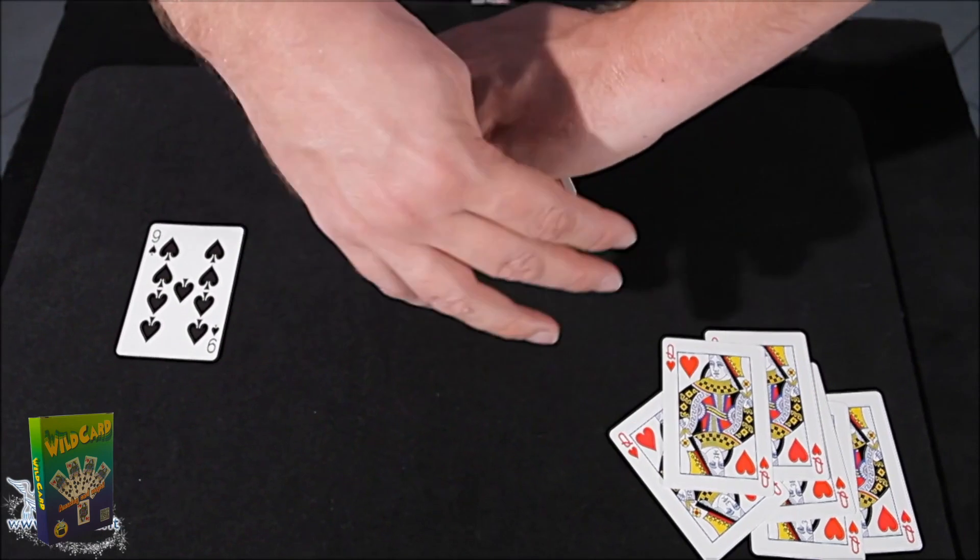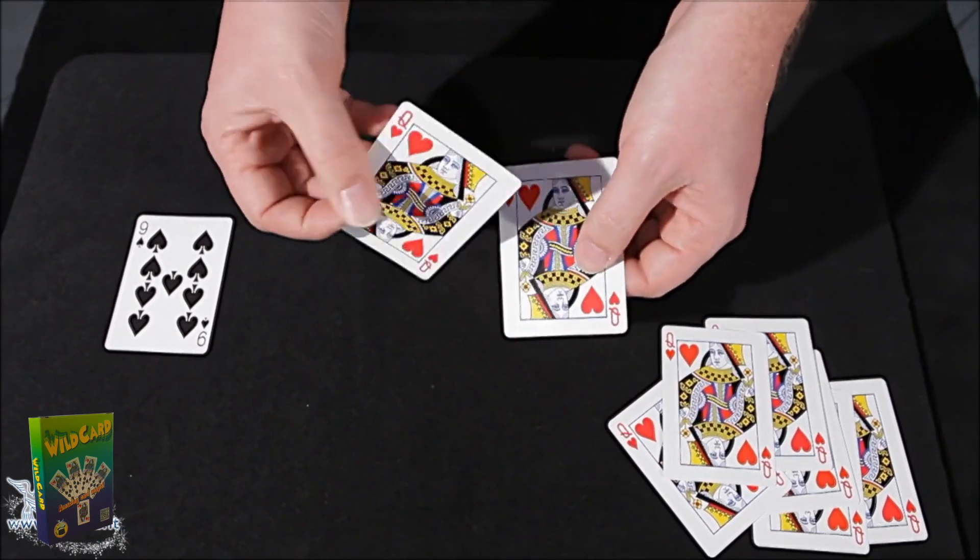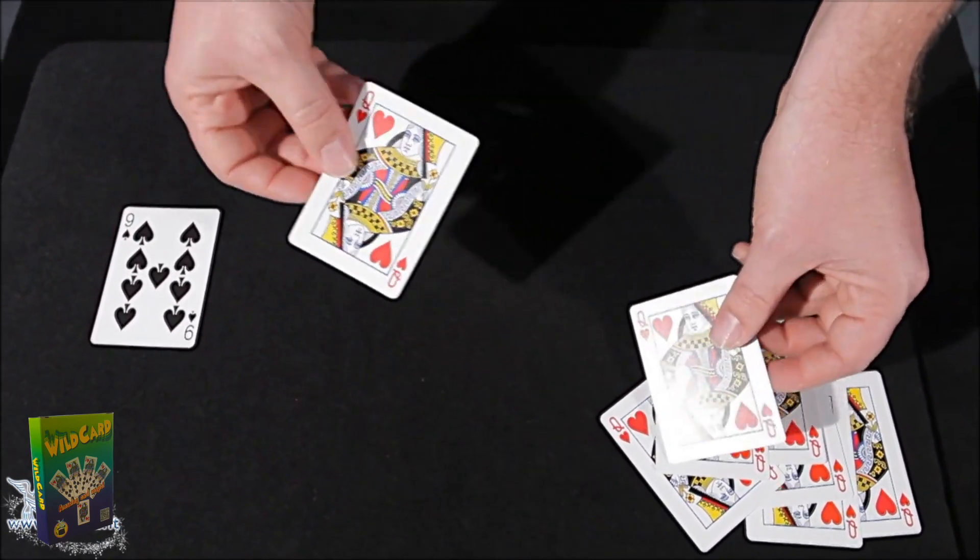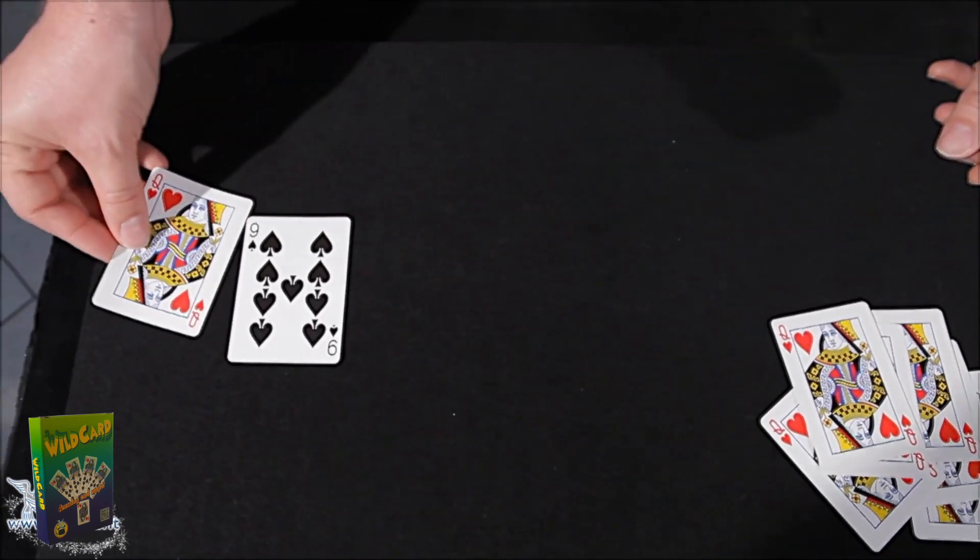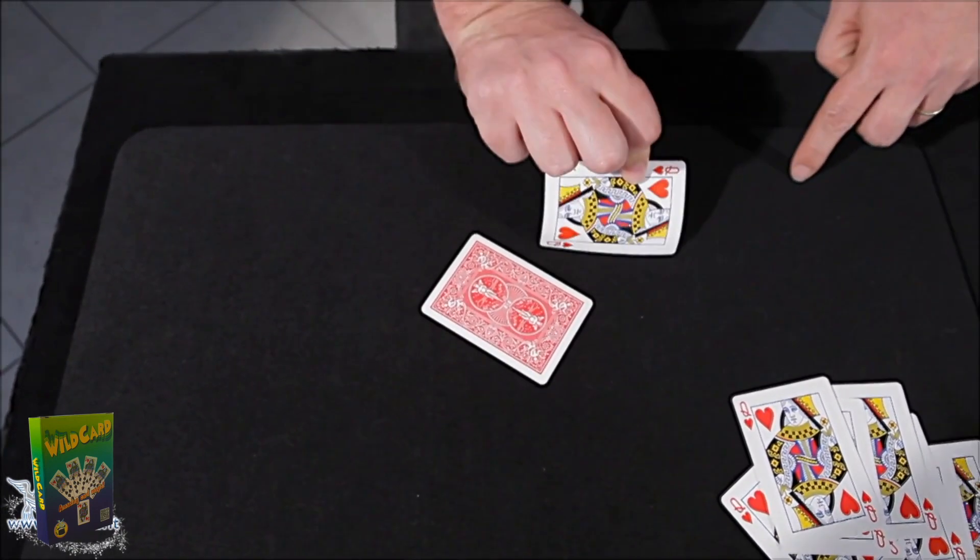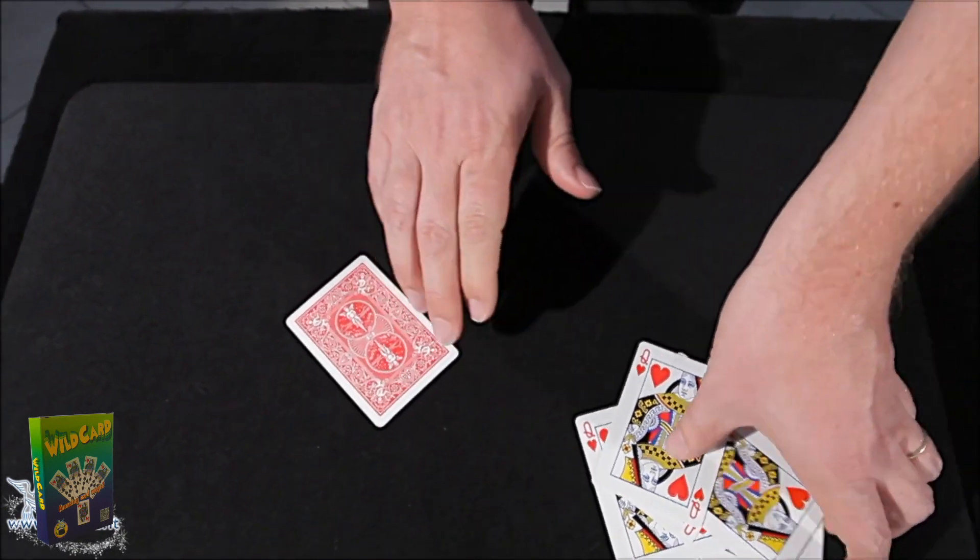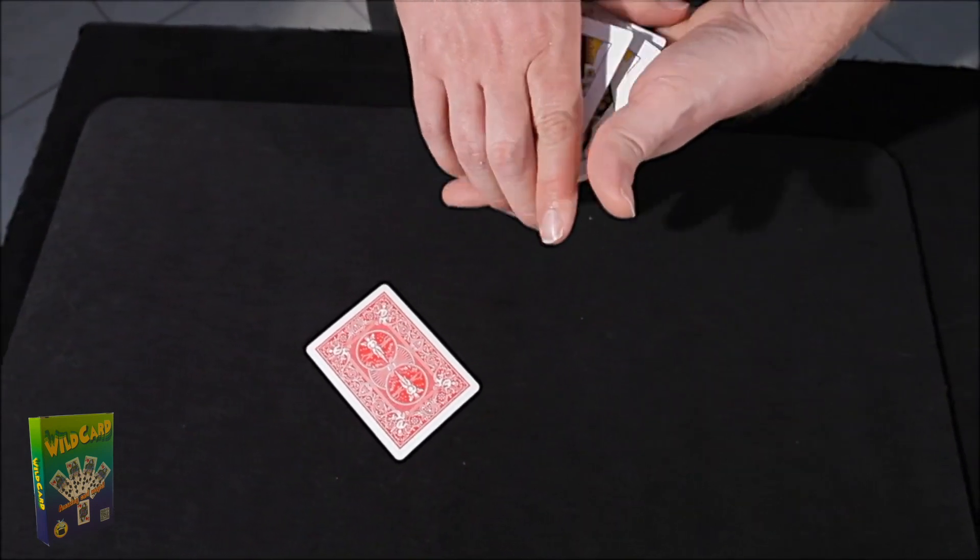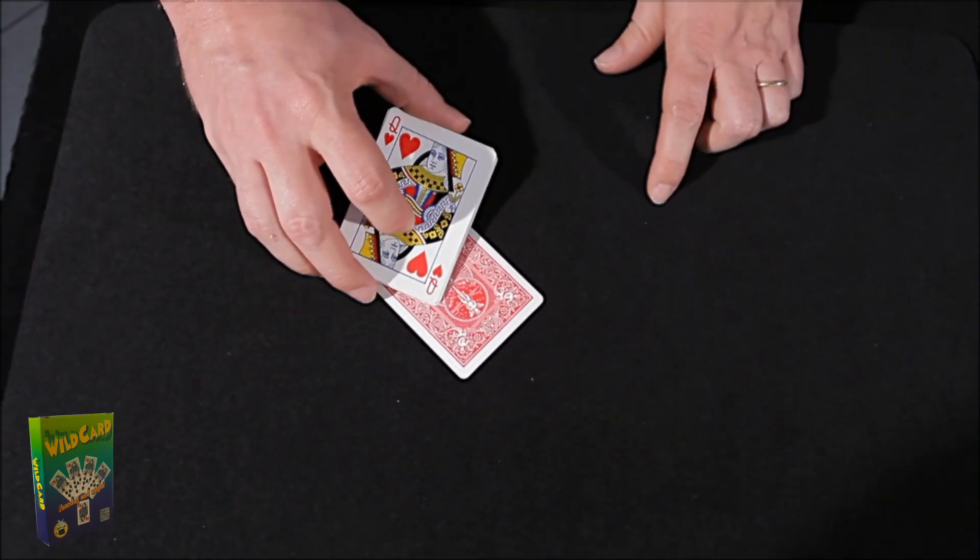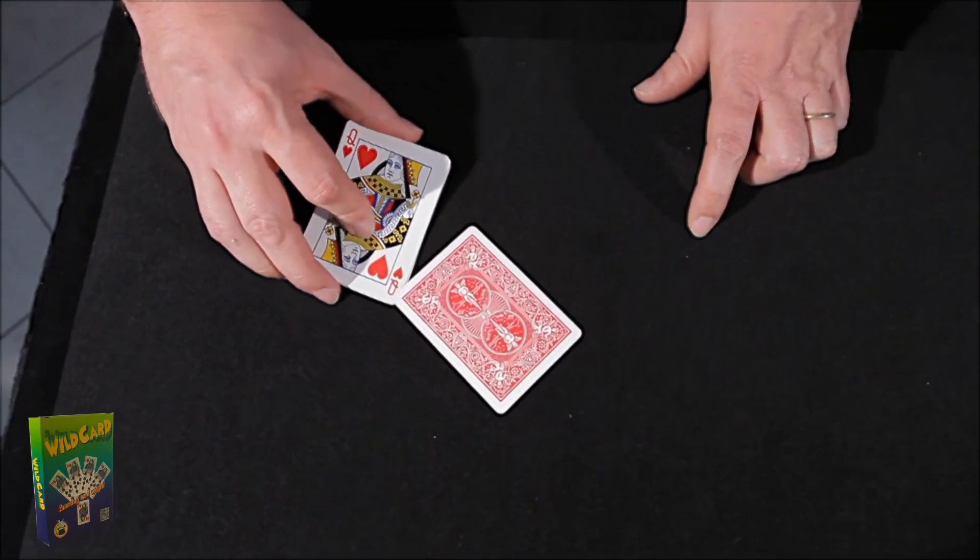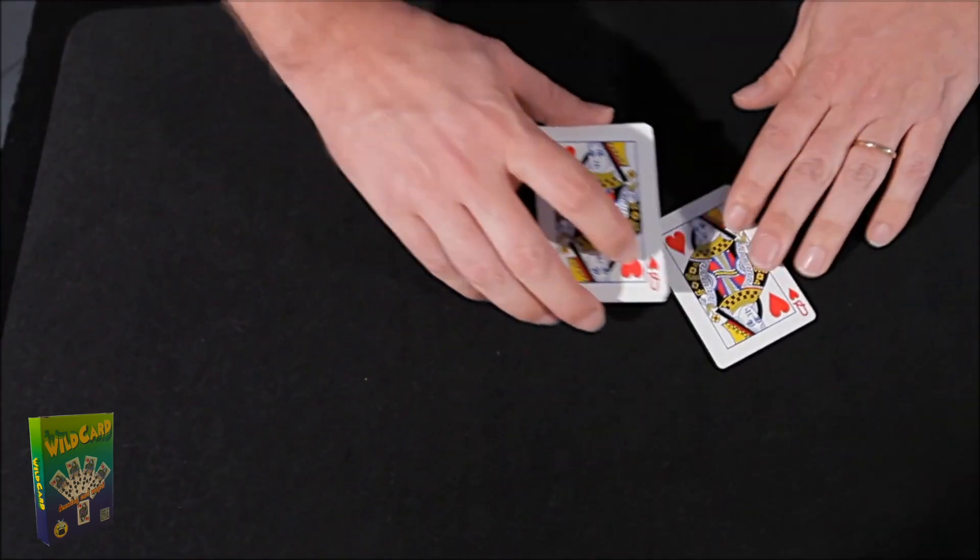Every single card changes into a Queen of Hearts. Now, the last card I don't want to even touch. I'll flip it over like this and leave it on the table. Now, all I have to do is rub the nine of spades with the wild cards, and even the last nine changes into a Queen of Hearts.